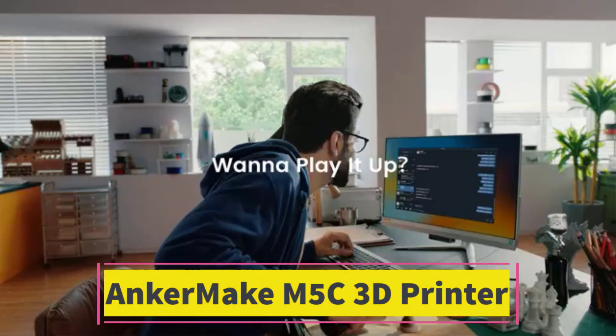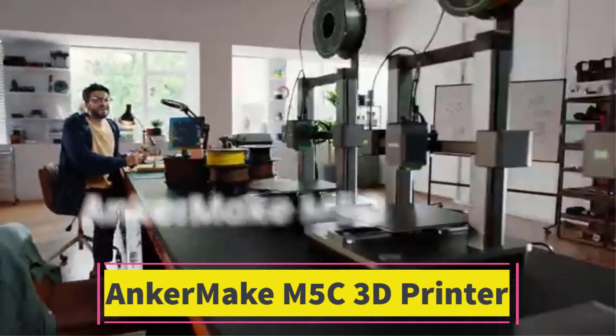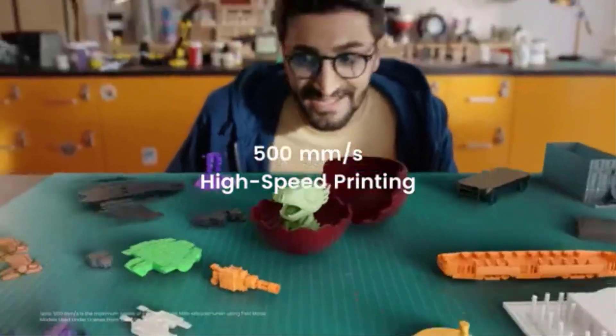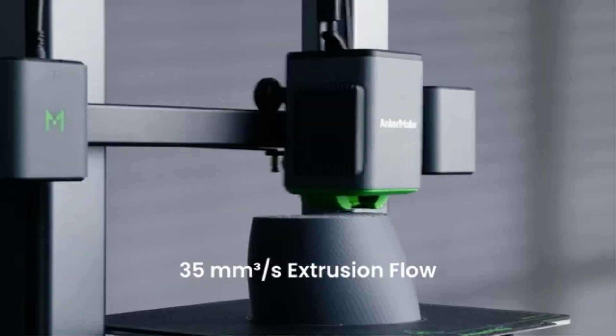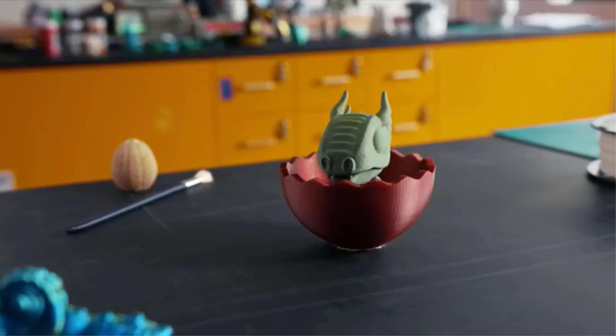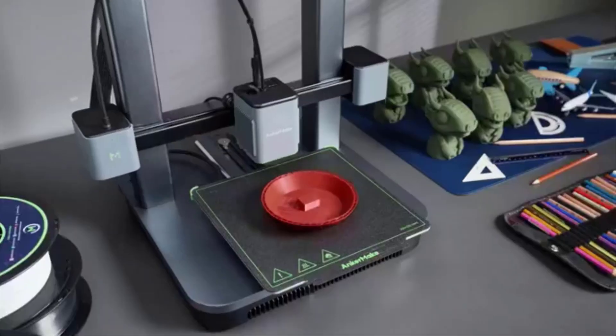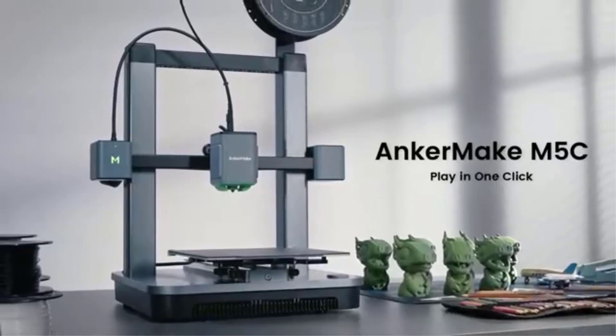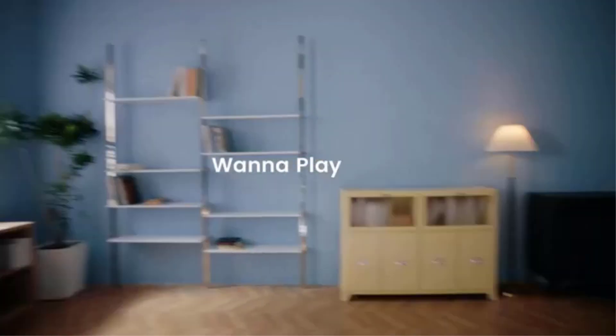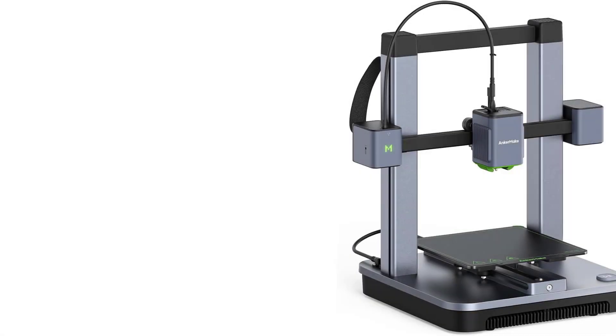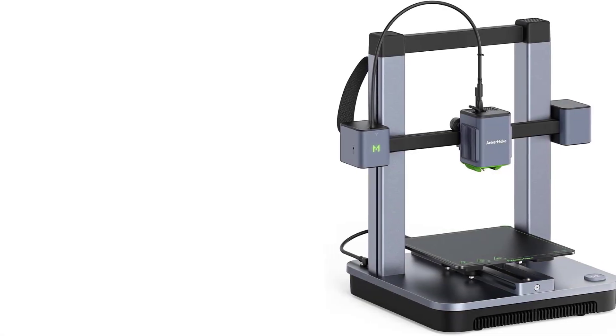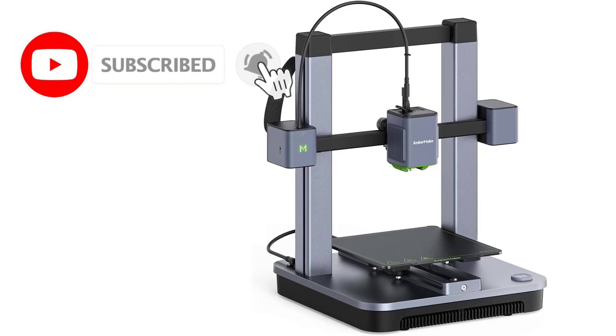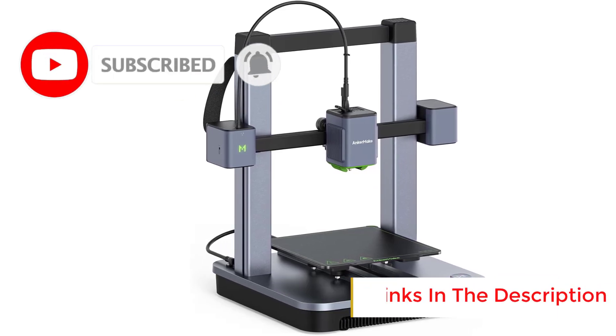Number 3. AnkerMake M5C 3D Printer. The AnkerMake M5C is a high-speed 3D printer designed for efficiency, ease of use, and precision. It boasts an impressive printing speed of up to 500mm per second, significantly reducing print times while maintaining quality. The all-metal hotend supports high-temperature printing up to 300 degrees Celsius, allowing compatibility with a variety of filaments, including PLA, ABS, PETG, TPU, and more.